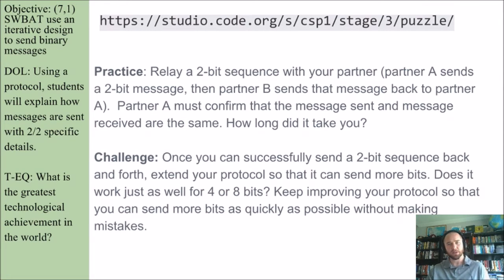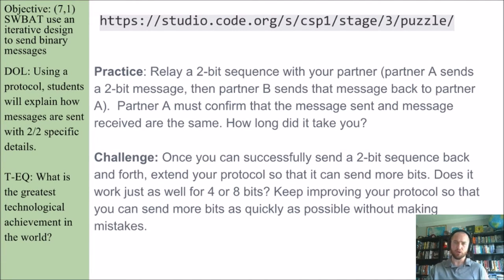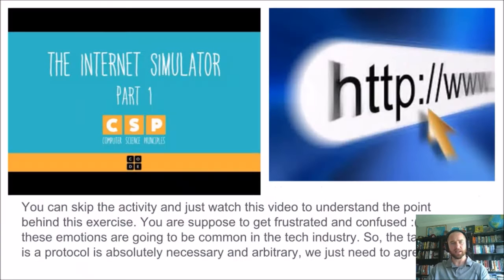Practice: relay a 2-bit sequence with your partner. Partner A — the longer-haired person — sends a 2-bit message, then partner B sends that message back. Partner A must confirm that the message sent and message received are the same. How long did it take you? Then the challenge: once you can successfully send a 2-bit sequence back and forth, extend your protocol so it can send more bits. Does it work just as well for 4 or 8 bits? Keep improving your protocol so you can send more bits as quickly as possible without making any mistakes.